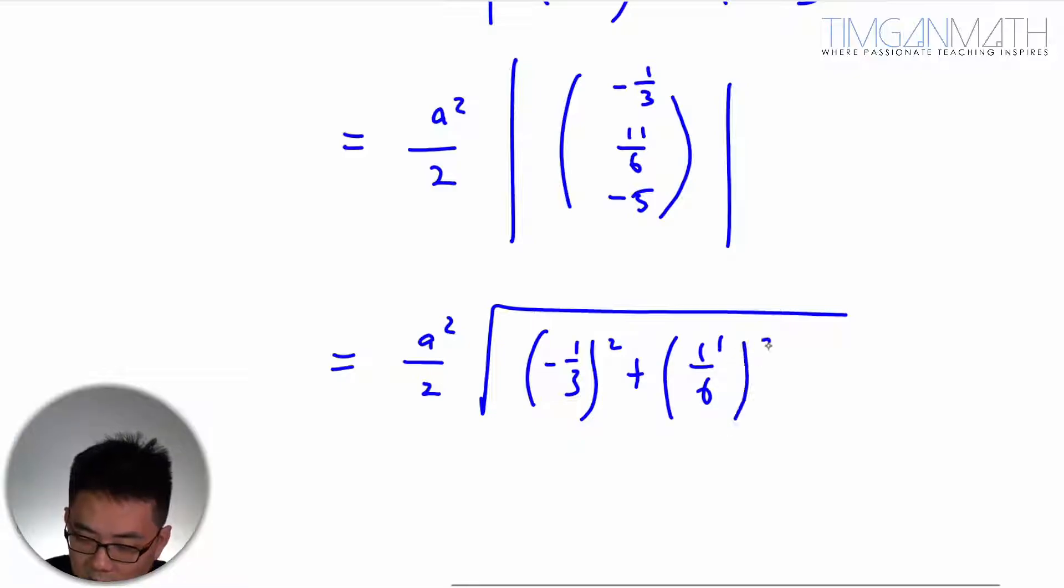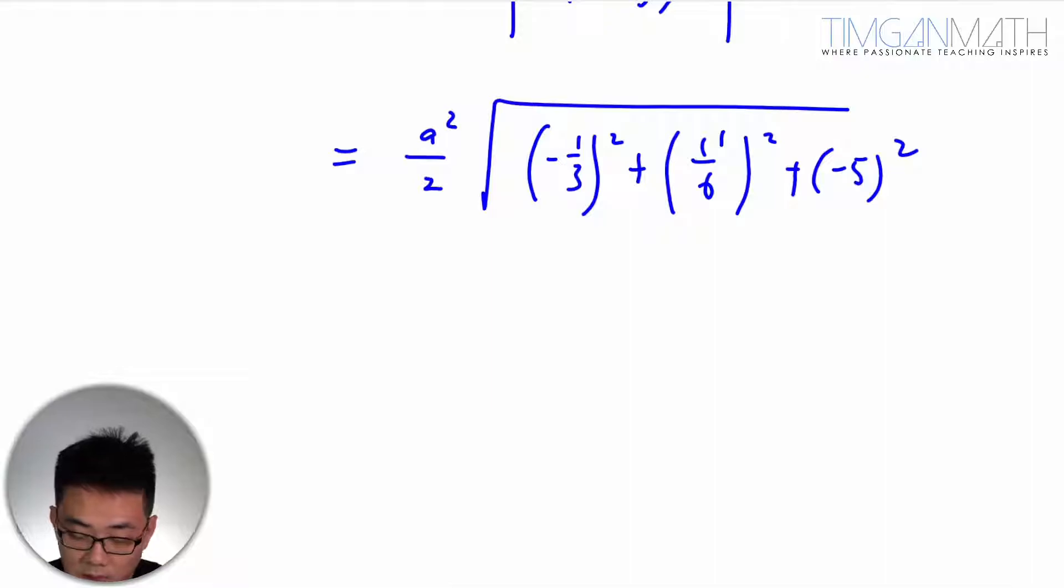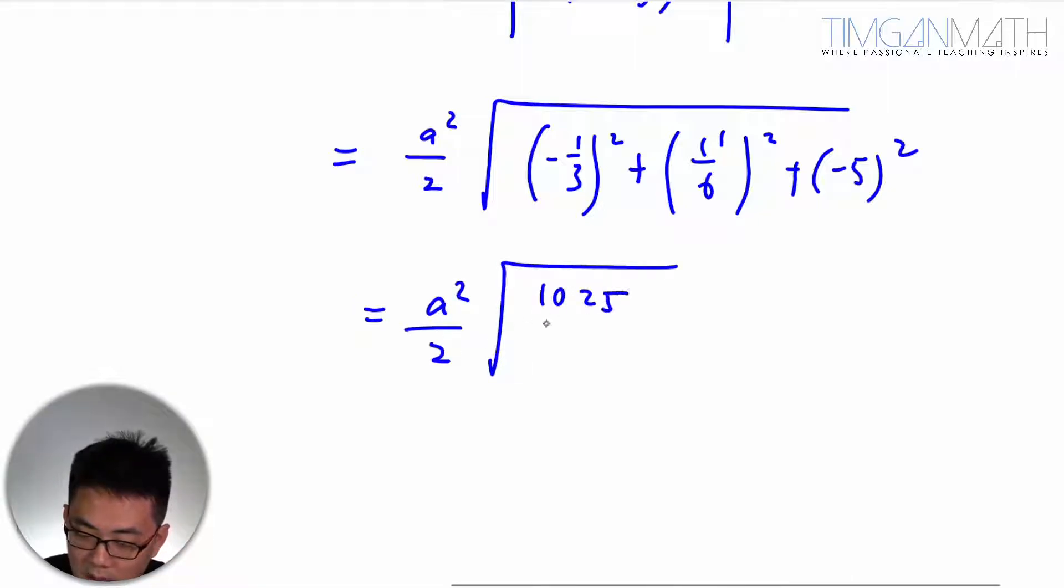You just need to double check. Cross product is pain. It's really a pain. So using calculator, this is 1 over 9. 1 over 9 plus 11 over 6 squared plus 25. That will be very nice number here. This is 1025 divided by 36.